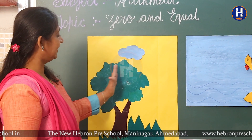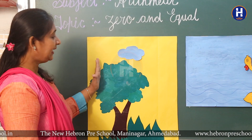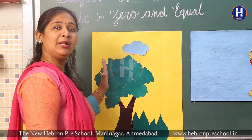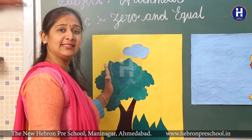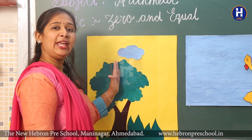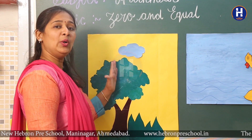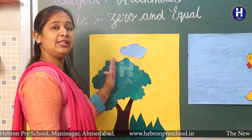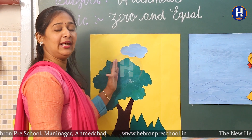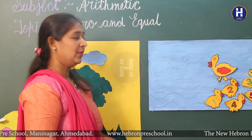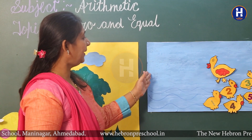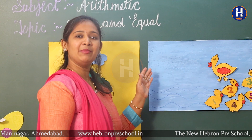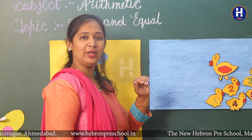So we can represent the tree without birds as zero birds — ek bhi bird nahi hai, toh isay hum zero birds bolenge. And now let me explain you the concept of zero by reciting my favorite poem: Five Little Ducks.